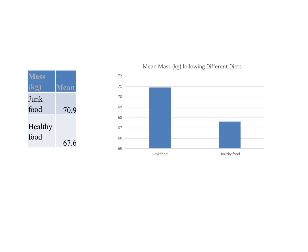At key stage three or four, the data might be presented as a simple chart. Higher GCSE might ask you to plot range bars. It would be sufficient to say that people on a junk food diet appear to have a higher mean mass than those on a healthy food diet. At A-level, however, we ask: is that difference statistically significant, or could it just be due to chance based on which individuals were chosen? To find out, you need to do a stats test — in this case, the t-test.